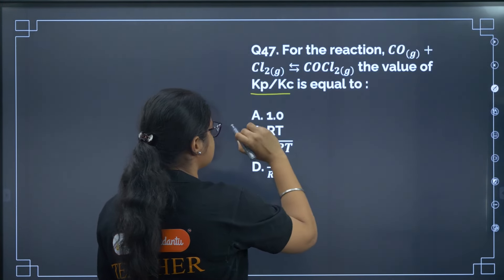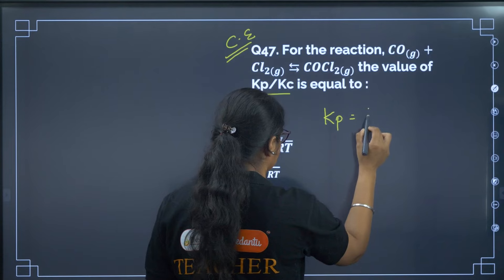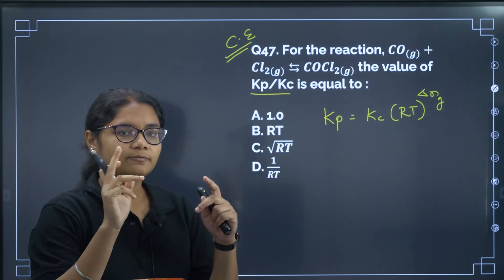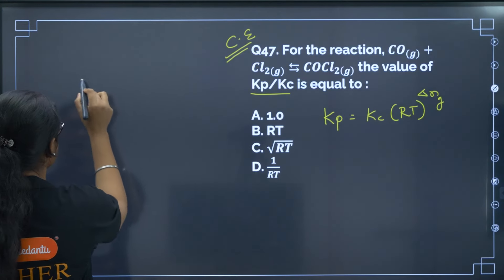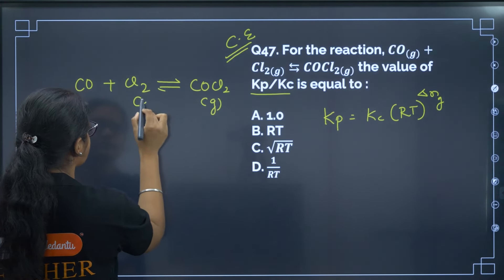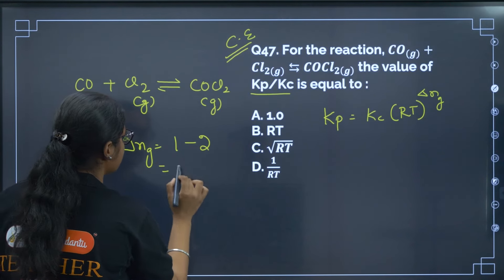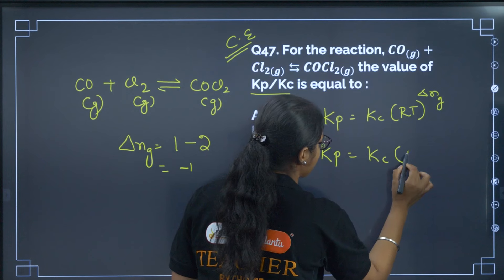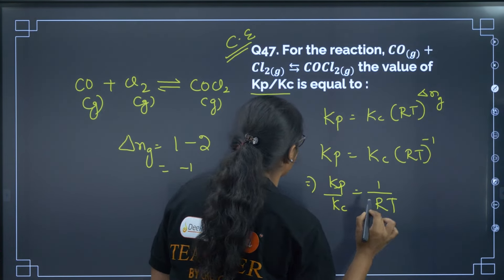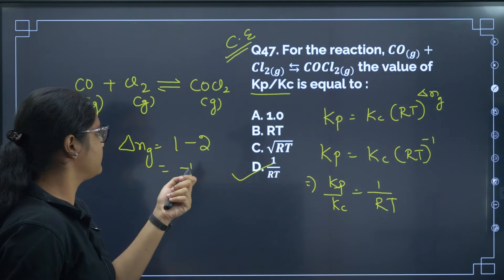Question 47: For the reaction CO + Cl2 → COCl2, find Kp/Kc. The relation is Kp = Kc(RT)^(ΔN). Delta N = moles of gaseous products − moles of gaseous reactants = 1 − 2 = −1. So Kp = Kc(RT)^(−1), which gives Kp/Kc = 1/(RT). The correct answer is option D. This is an important formula from chemical equilibrium.